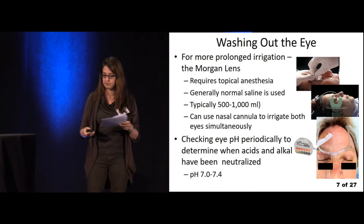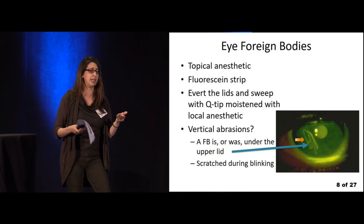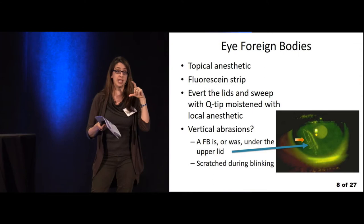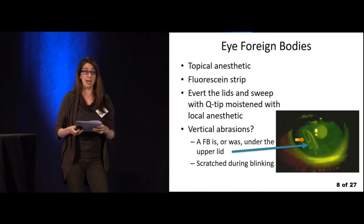For foreign bodies, use topical anesthetic — that's useful for all things relating to the eye with discomfort. Use the fluorescein strip. Some put the strip directly in the eye; I tend to take a saline flush or small saline tube, get the fluorescein in there, and drop it into the patient's eye. Then look with your Woods lamp or slit lamp exam.